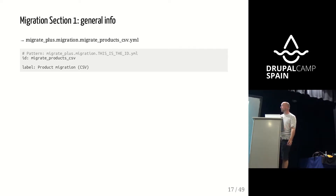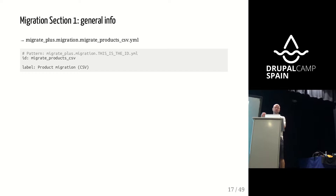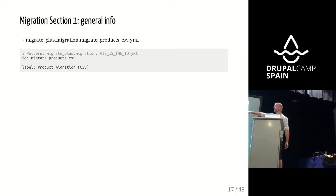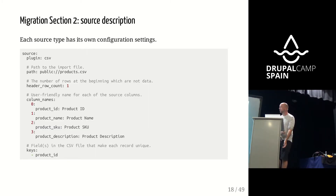First, the general info: an identifier. This same identifier that you use in the file name, you need to use here as the ID so that Drupal knows where to find the definition. This is also the ID you're going to use when you run Drush — you tell Drush to execute migrate_product_csv migration, and Drush will know which one to run. And you give it a user-friendly name. That's the easy bit.